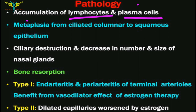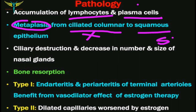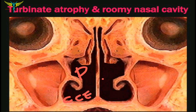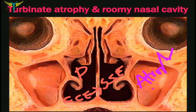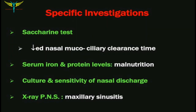The pathology of atrophic rhinitis includes accumulation of lymphocytes and plasma cells. The main pathology is metaplasia — the normal ciliated columnar epithelium of the nasal mucosa is lost and replaced by stratified squamous epithelium. There is ciliary destruction and decrease in the number and size of nasal glands. Bone resorption leads to turbinate destruction. Additionally, there is atrophy of seromucinous glands and nerve elements, leading to decreased nerve sensation and anosmia.